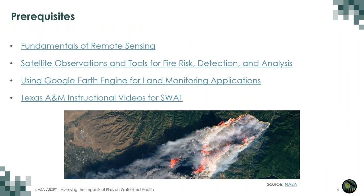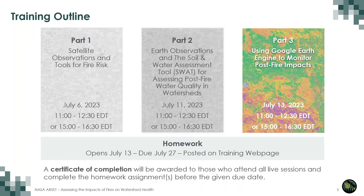The prerequisites for this training are linked here, including the fundamentals of remote sensing, satellite observations and tools for fire risk detection and analysis, using Google Earth Engine for land monitoring applications, and the Texas A&M instructional videos for SWAT. Just a reminder, this is part three of this series. Following this training, the homework will be open and posted to our training web page. Please note the due date of July 27th. A certificate of completion will be awarded to those who attend all the live sessions and complete the homework assignments before the due date.